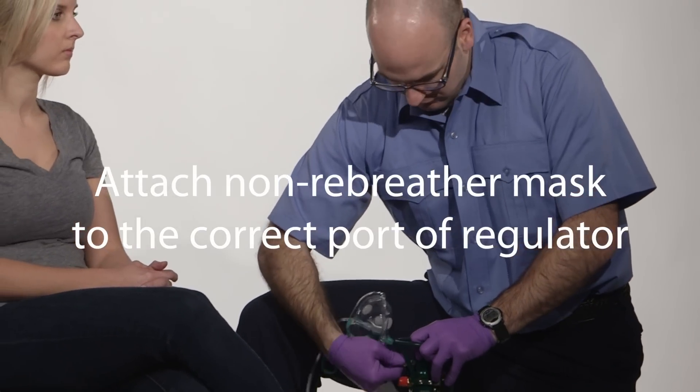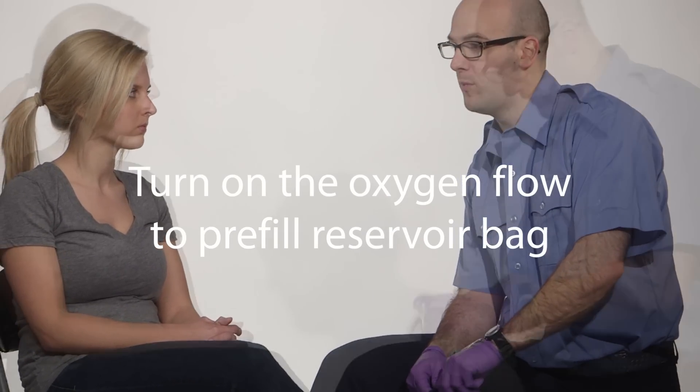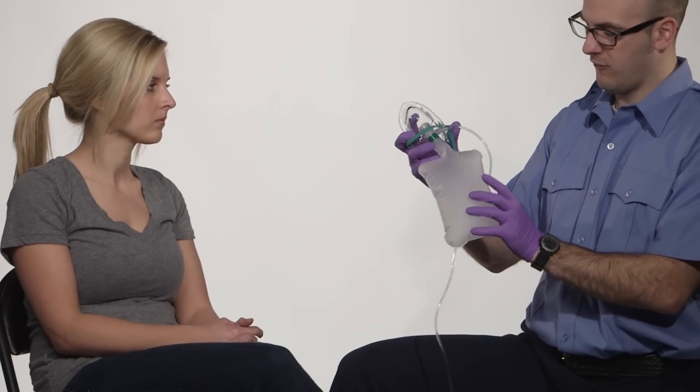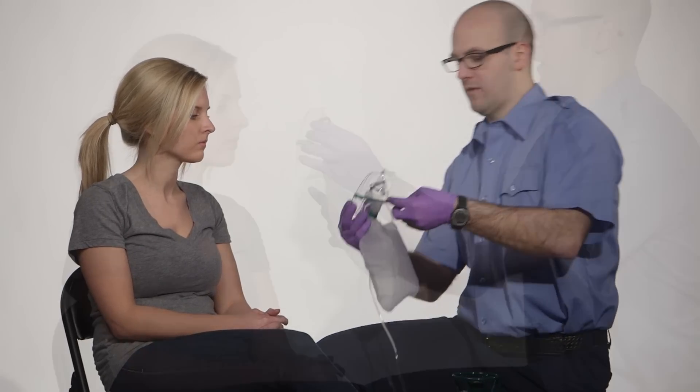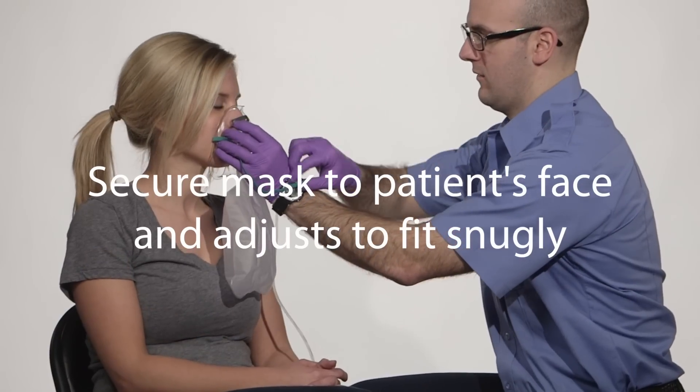You must attach a non-rebreather mask to the correct port of the regulator. Turn on the oxygen flow to pre-fill the reservoir bag. Adjust the regulator to assure oxygen flow rate of at least 10 liters per minute and secure the mask snugly to the patient's face.